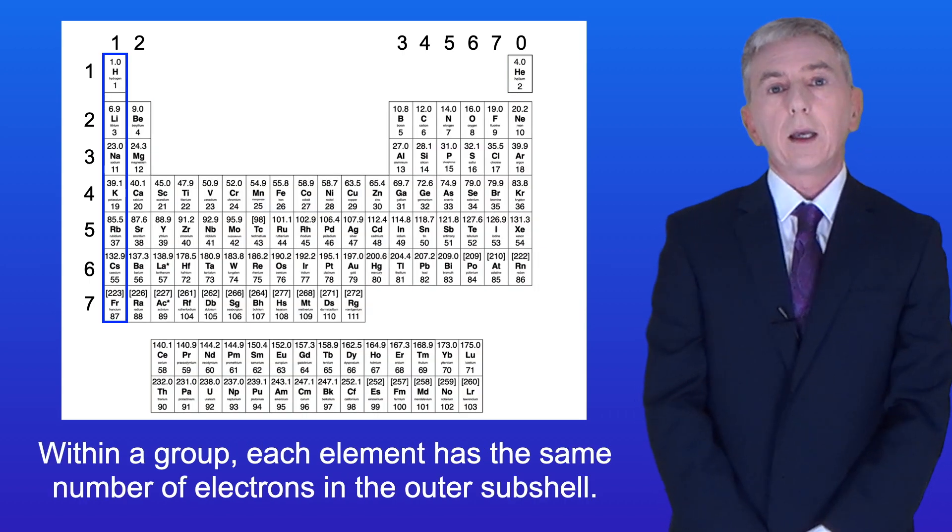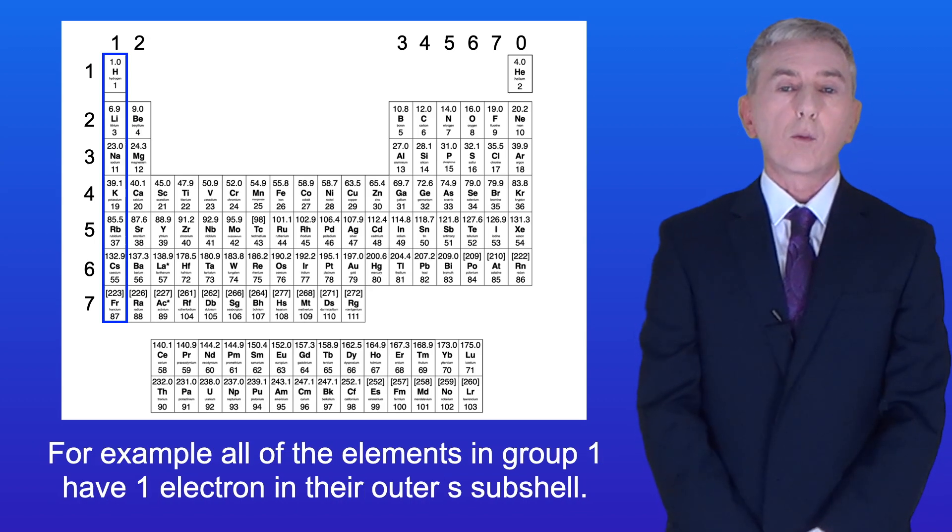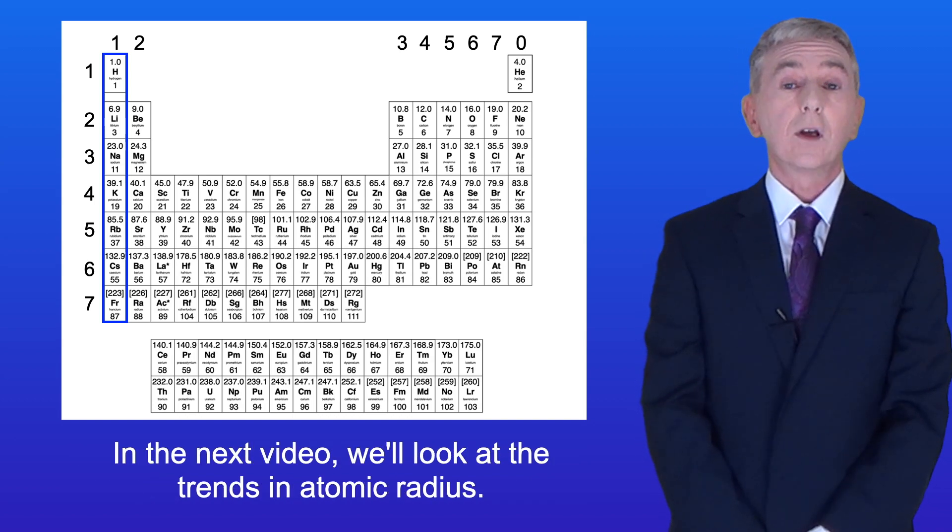Now within a group, each element has the same number of electrons in the outer subshell. For example, all of the elements in group 1 have one electron in their outer s-subshell. And because of this, all of the elements in a group have similar chemical properties. Okay, in the next video we look at the trends in atomic radius.